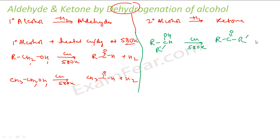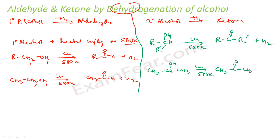A specific example for ketone formation: CH3CH(OH)CH3 heated with Cu at 573 K gives CH3COCH3 and hydrogen gas. So you can use either method — copper-catalyzed dehydrogenation or an oxidizing agent — to convert alcohols to aldehydes and ketones. Both methods achieve the same conversion.